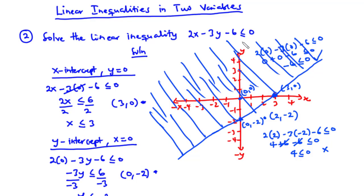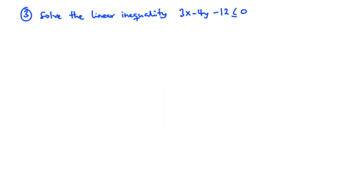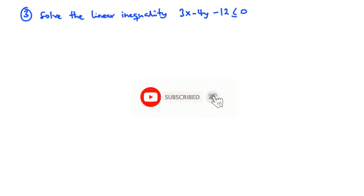Because the inequality sign is ≤, the line is included in the region that satisfies the linear inequality. This is how to solve a linear inequality involving two variables. Now let's solve another example: 3x − 4y − 12 ≤ 0.